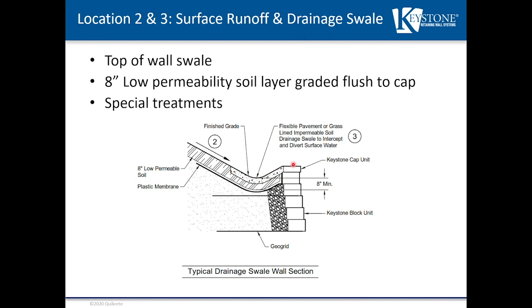The drainage swale should be a flexible pavement-style system or grass-lined swale — something that can move with the soil. Segmental retaining wall systems are flexible by nature, which is an advantage. A rigid swale can develop intermittent cracking as soil shifts, allowing water to enter through cracks and go where it shouldn't. A flexible-style swale limits cracking and reduces unintended water infiltration.